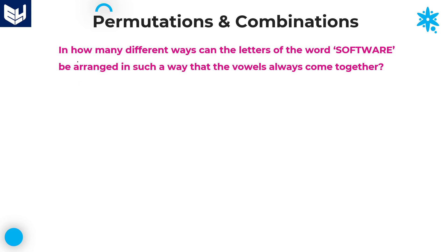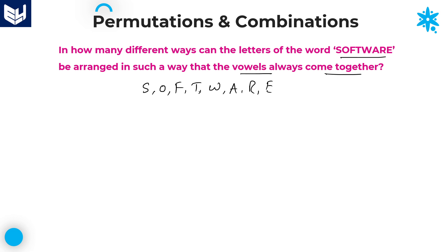See the next question. In how many different ways can the letters of the word SOFTWARE — S-O-F-T-W-A-R-E — be arranged in such a way that the vowels always come together? That is the question here. It is a total 8-letter word and the condition is very important — read it carefully. The condition given is that the vowels always come together.